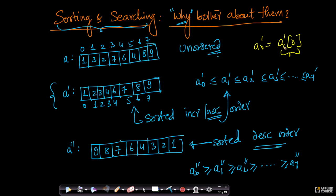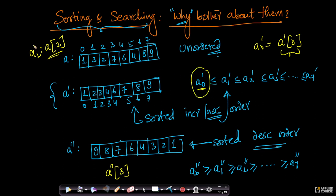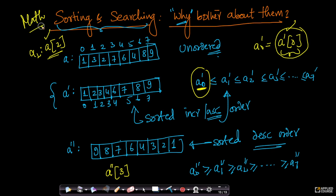Just to clarify notation: when I write A[3], what I mean is the third element of array A — this is the programming syntax used in C, Java, or Python. This mathematical notation and the programmatic notation will both be used extensively throughout data structures and algorithms, because most algorithms in this field were actually designed by mathematicians and physicists for use in computers.